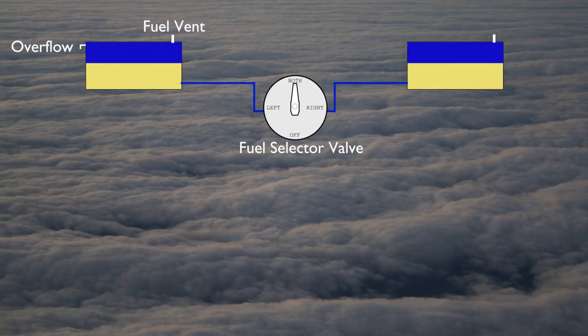Alternatively, an airplane may be equipped with a fuel shutoff valve, which simply has an on or off selection.